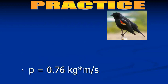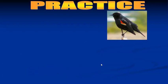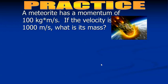And you get 0.76. The unit for momentum, you can see right here, kg times m over s. That's really just the unit for mass multiplied by the unit for velocity. So that's how we get that. But if you wanted to have the correct units, that's what you would write after the number.